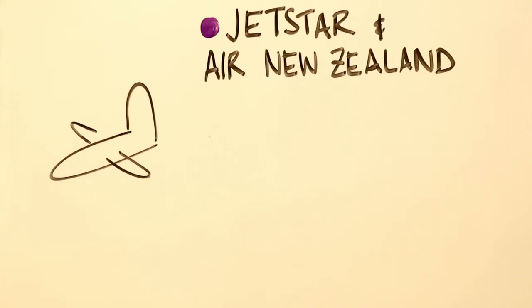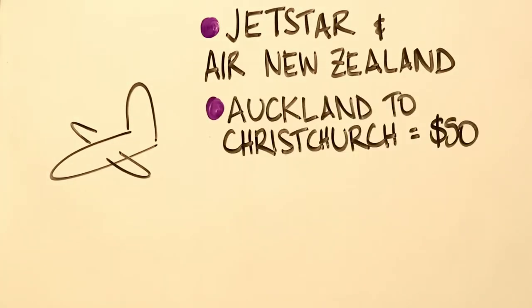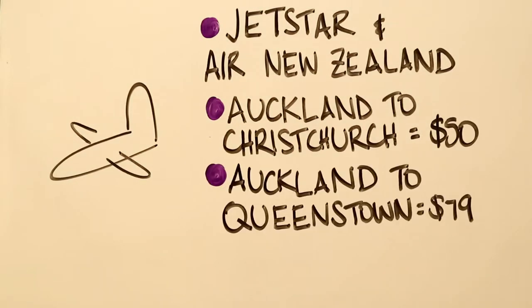The cheapest flights are usually between the bigger cities. And prices vary, but if you book early, Auckland to Christchurch is about $50 for example, and Auckland to Queenstown is around $79.